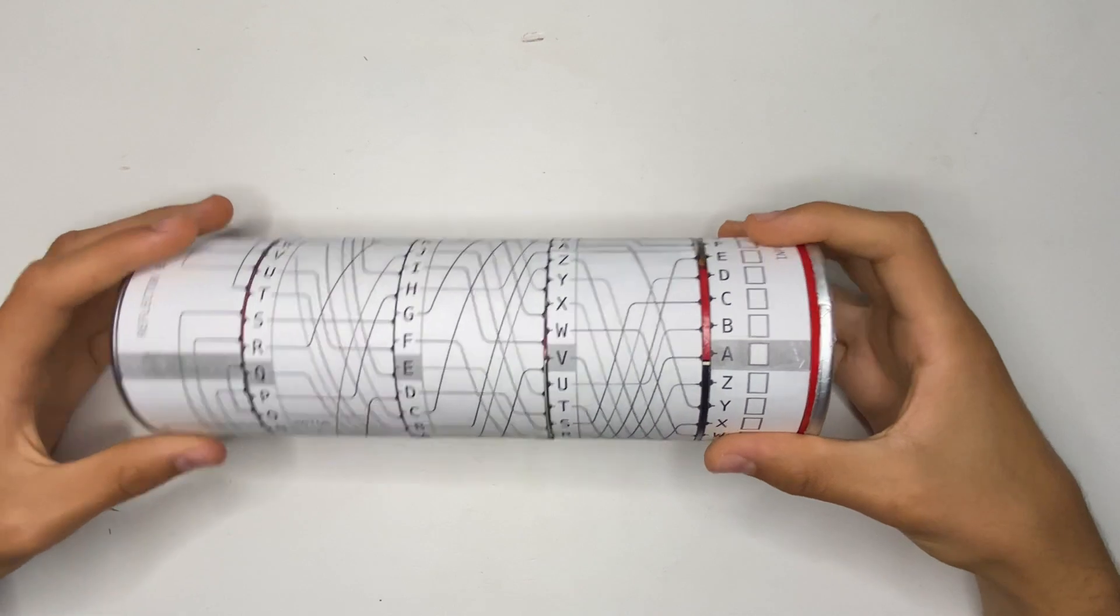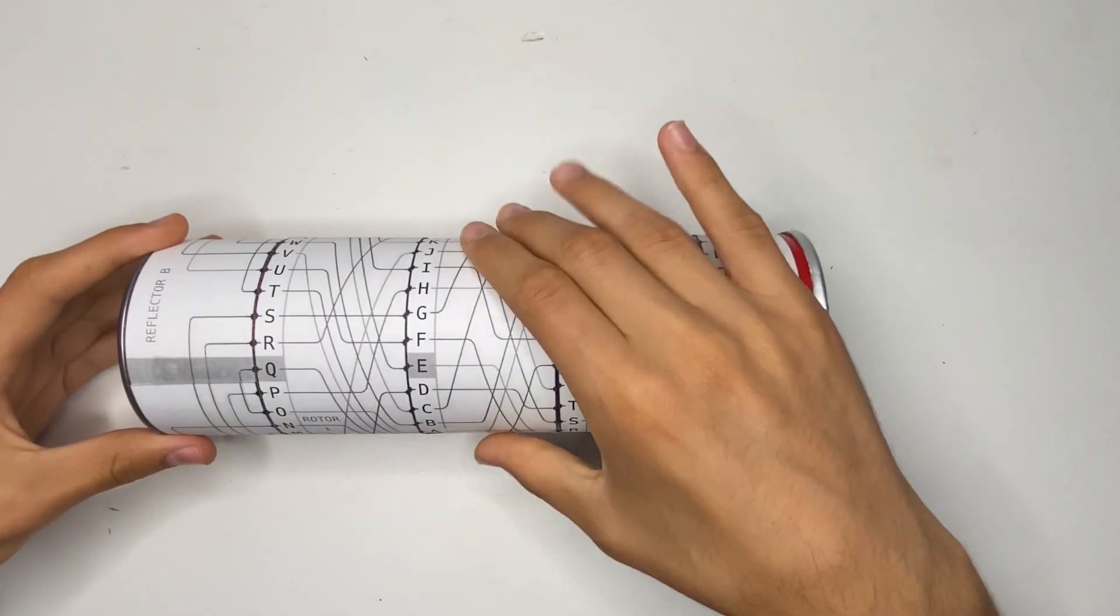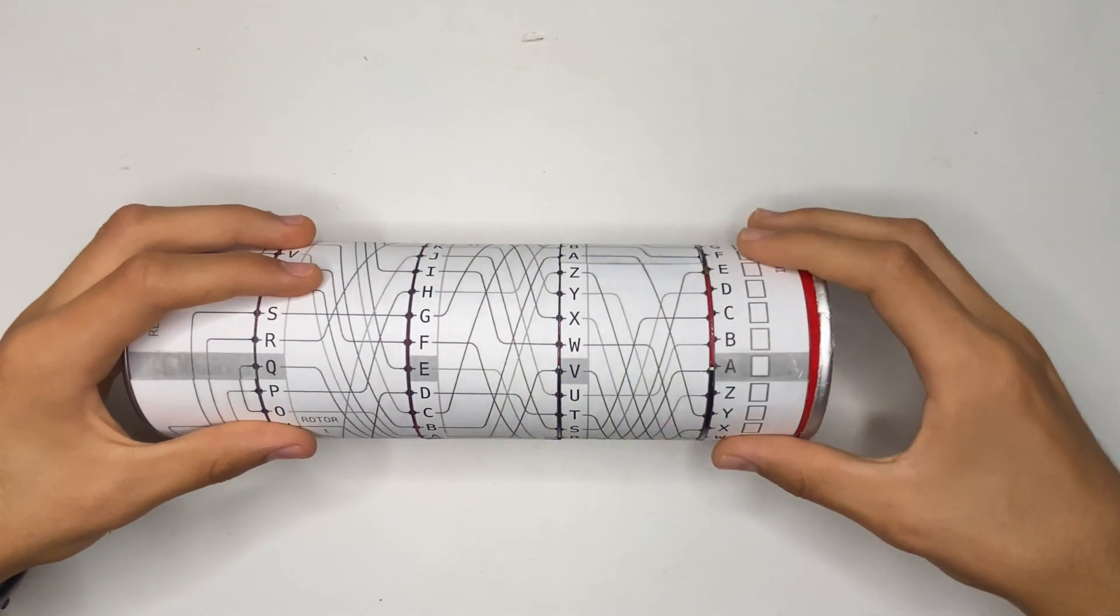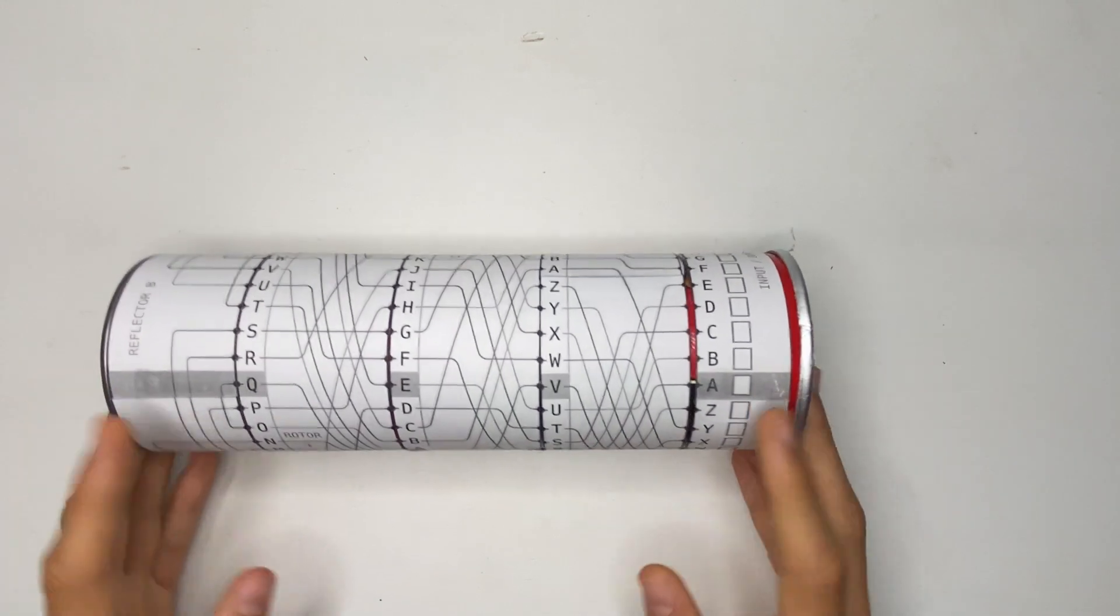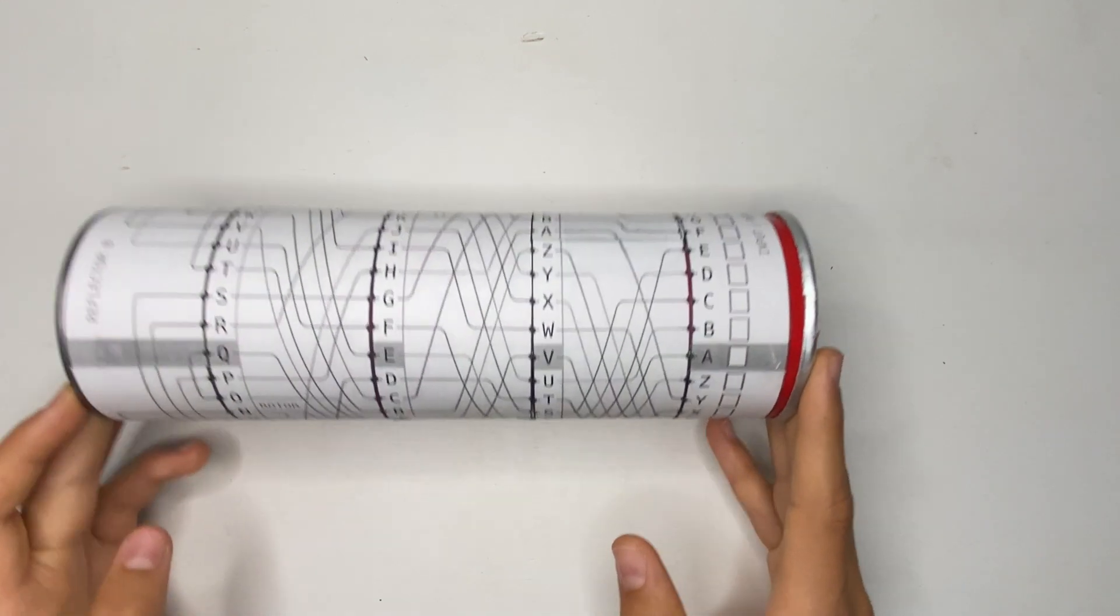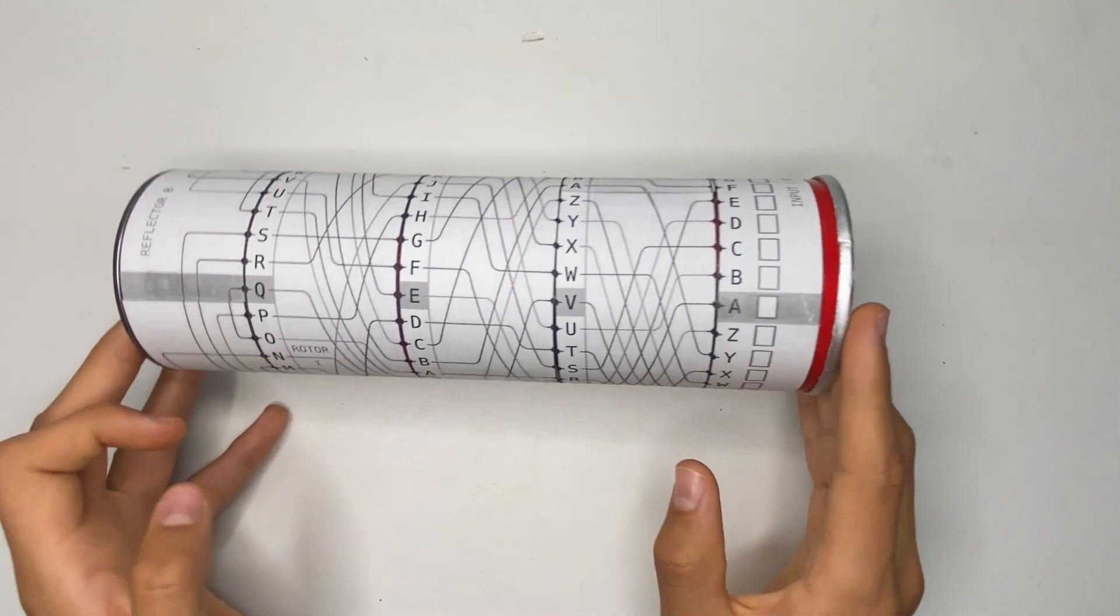Okay, so here we are with our completed Enigma machine. So what we're just going to do is here I'm going to align each of these. You want to make sure that now the input-output cylinder is aligned, that that gray bar is aligned with the reflector.